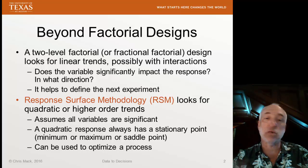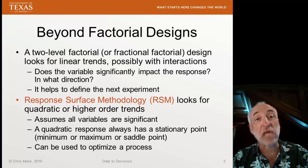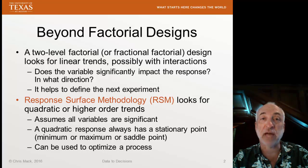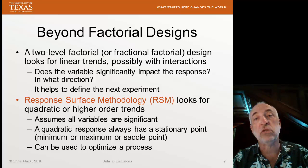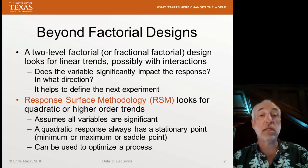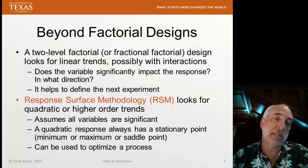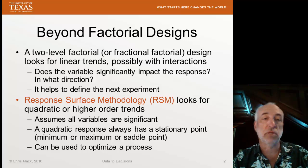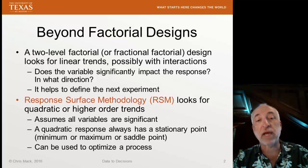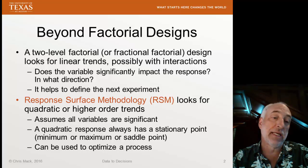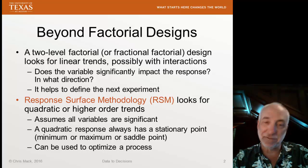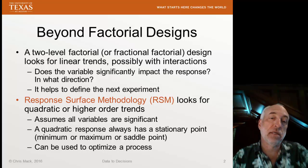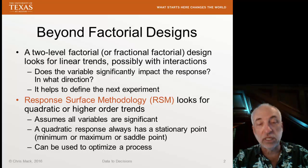Why second-order? One of the advantages of a second-order model, even though it's often an approximation to real-life behavior, is that second-order responses always have a stationary point — that is, a minimum, a maximum, or a saddle point. Quite frequently, our purpose in doing design of experiments is to find the optimum: the place where yield is maximized, failure rate is minimized, or some other desirable property is achieved. With a quadratic, we're always guaranteed exactly one minimum. That's an advantage, but it can also be a disadvantage — if behavior is more complicated, there may be more than one optimum, and we won't see that if we only look in a quadratic way.